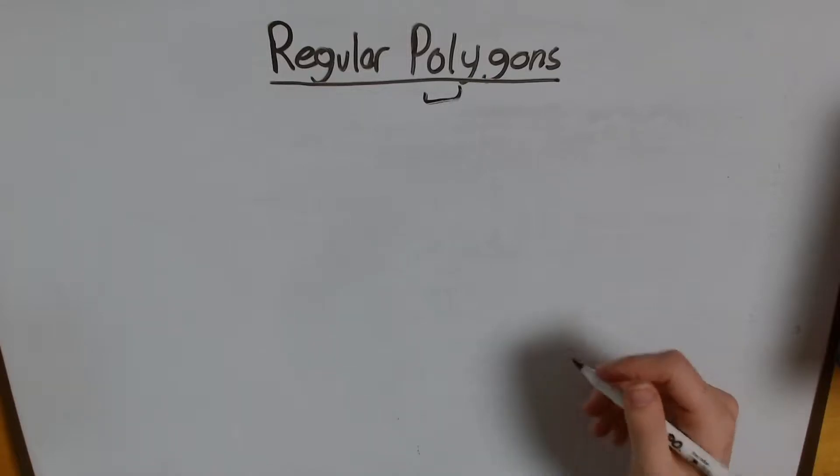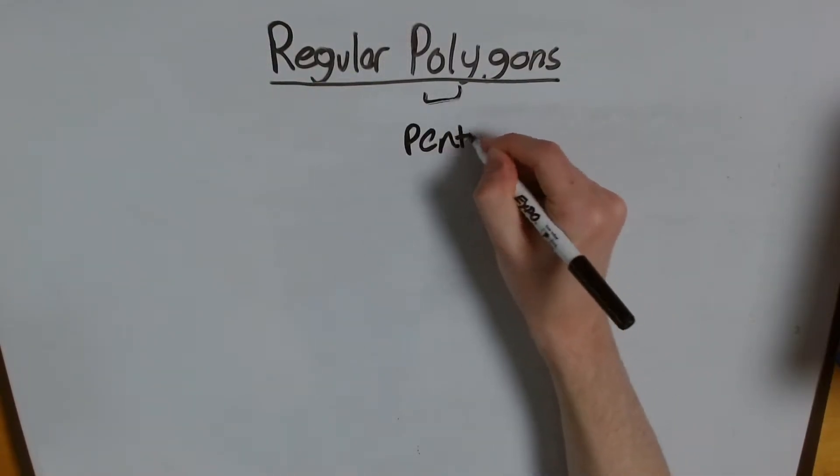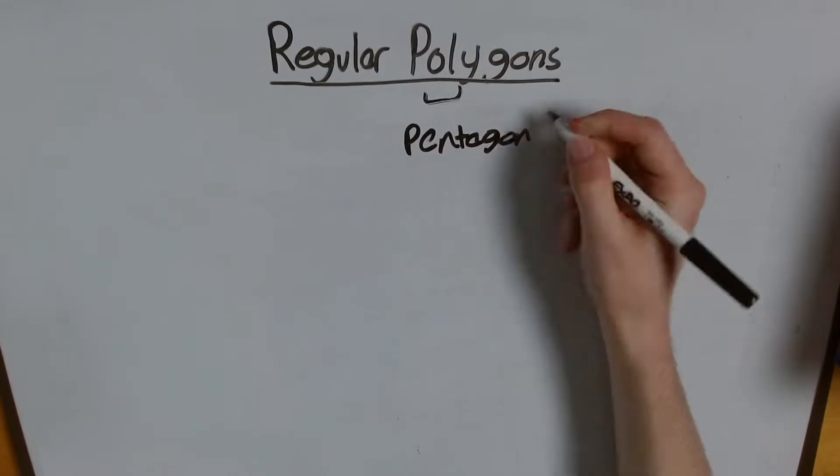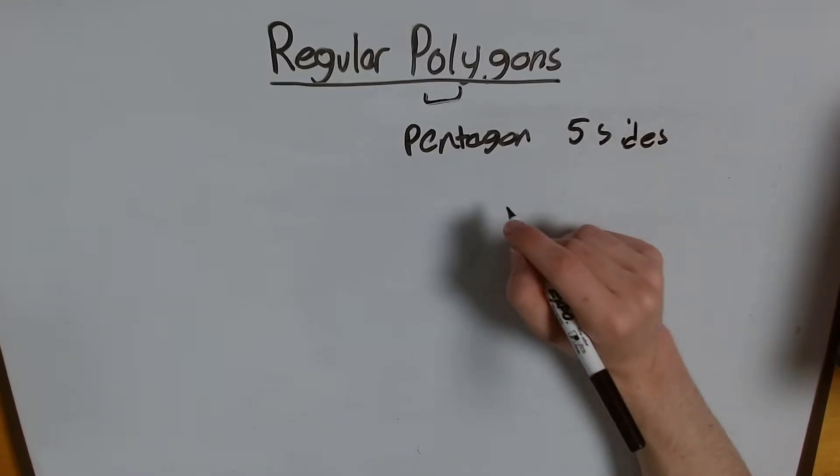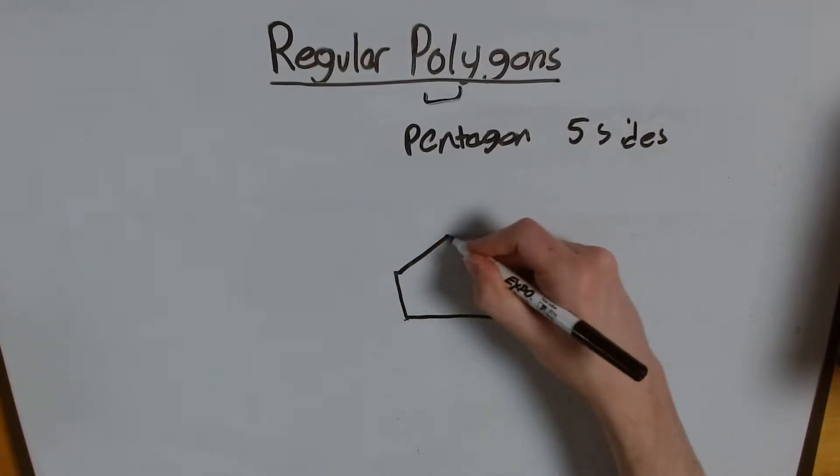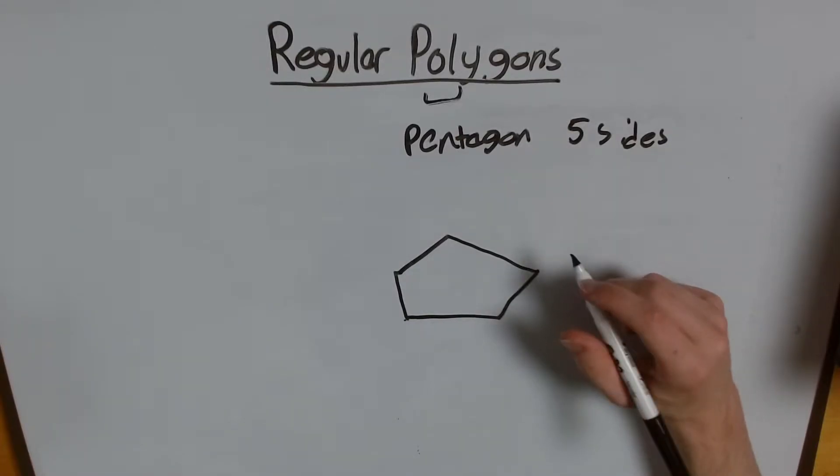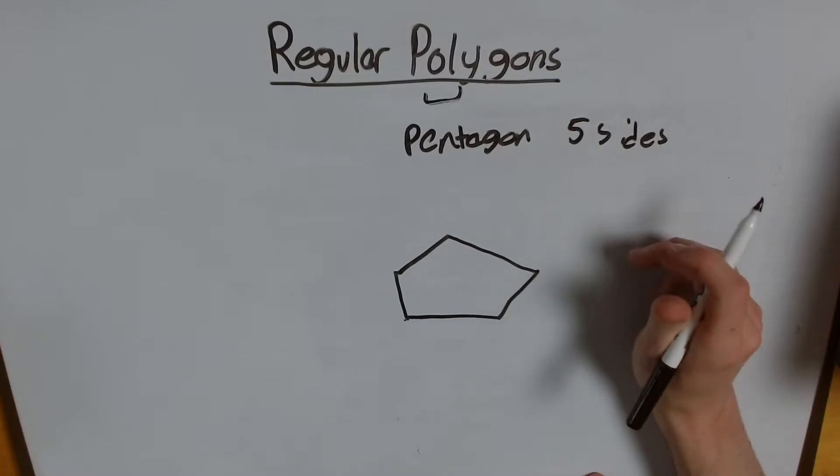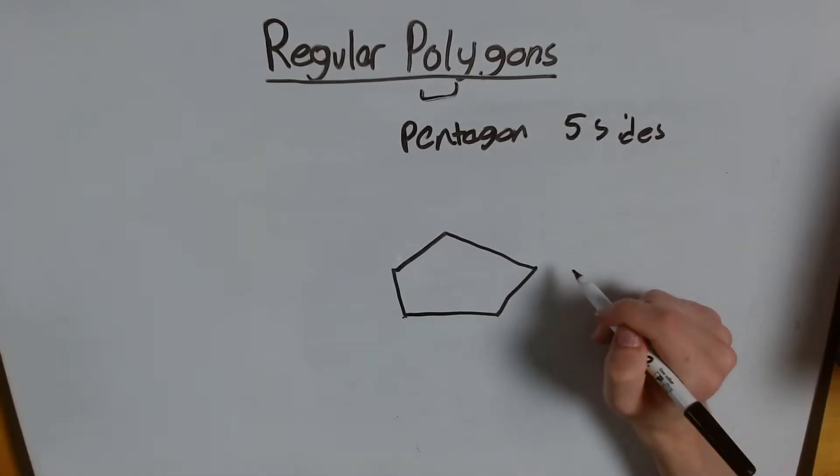So, let's start with a pentagon. A pentagon has five sides. And a regular pentagon, of course, is where all those five sides are equal. Now, of course, this is not drawn to scale. I don't have a ruler with me, so I can't make sure they're all exactly equal. But just know, in this drawing, according to me, all these sides are the same.